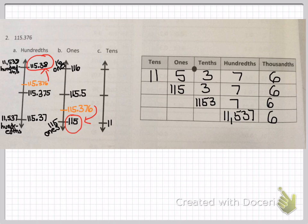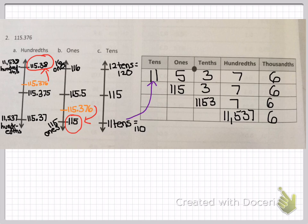Let's move on to tens. According to our place value chart, we have eleven tens, which is the same as one hundred and ten. At the top there should be twelve tens, which is one hundred and twenty. I'm reminding you that I pulled that eleven from our place value chart. Our midpoint is one hundred and fifteen. Our number sits right above one hundred and fifteen, right above our midpoint. Which means it's going to be rounding up to one hundred and twenty.